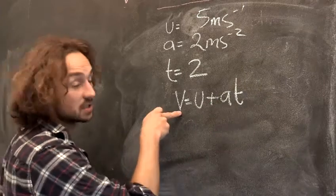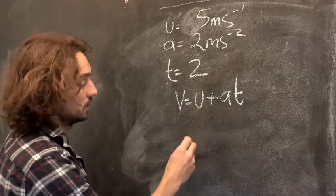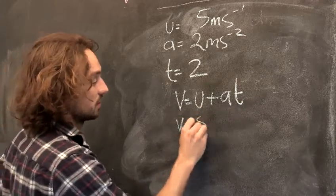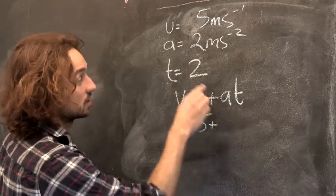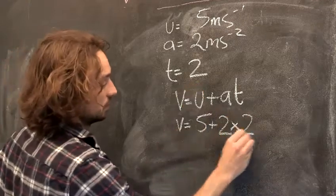It says that my velocity, my initial velocity, plus my acceleration times the time I do that for, that's two.